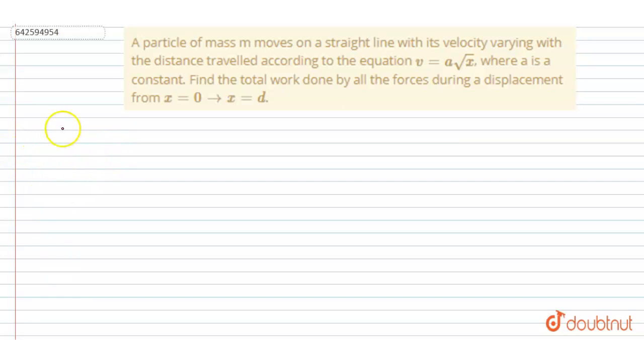The first method is by work energy theorem. From that, just write: work done by all is simply equal to the change in kinetic energy, and the change in kinetic energy is half of m v final square minus v initial square. And you can already see the v is this, right?